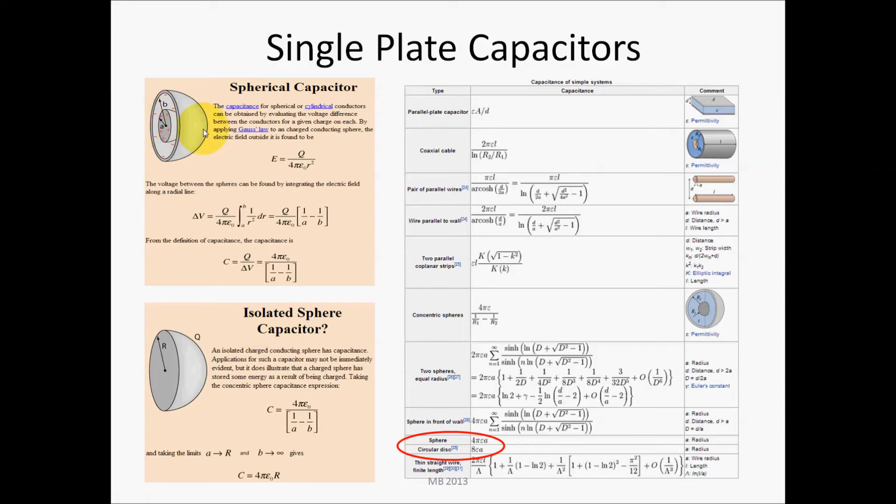So you can think of the single plate capacitor as a capacitor where the other plate is ground at infinity, which is kind of an interesting mathematical point of view, and that's why I thought the people at the Gathering for Gardner might be interested.